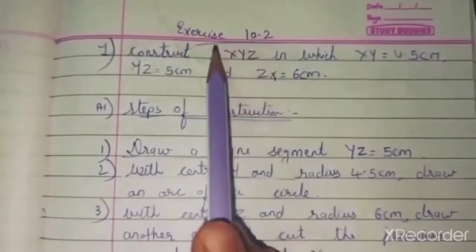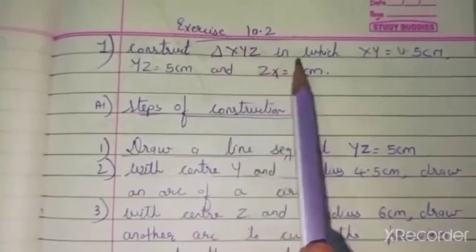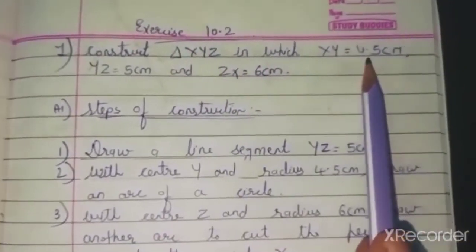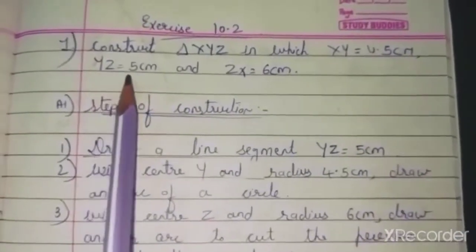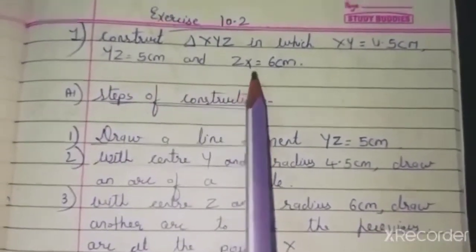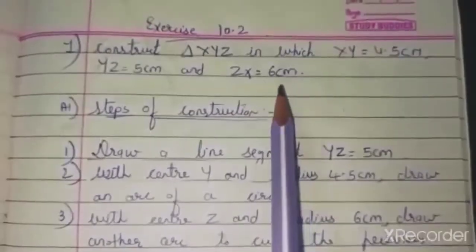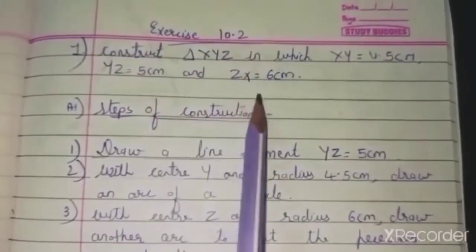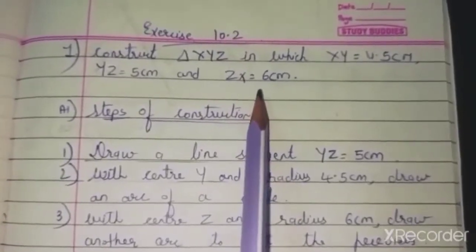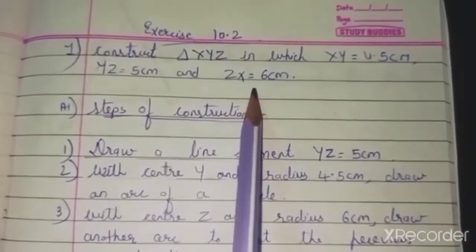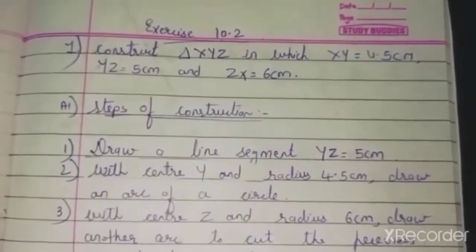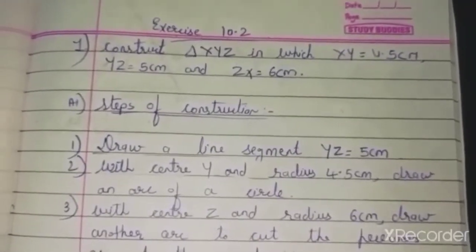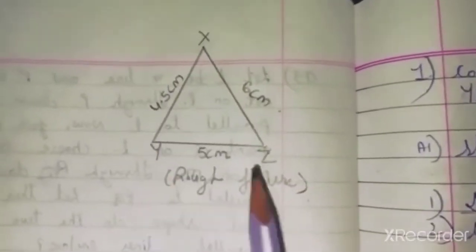A triangle has 3 sides: XY should be 4.5 cm, YZ should be 5 cm, and ZX should be 6 cm. To get a proper idea of the sides, first we will draw a rough sketch — a rough sketch of triangle XYZ.